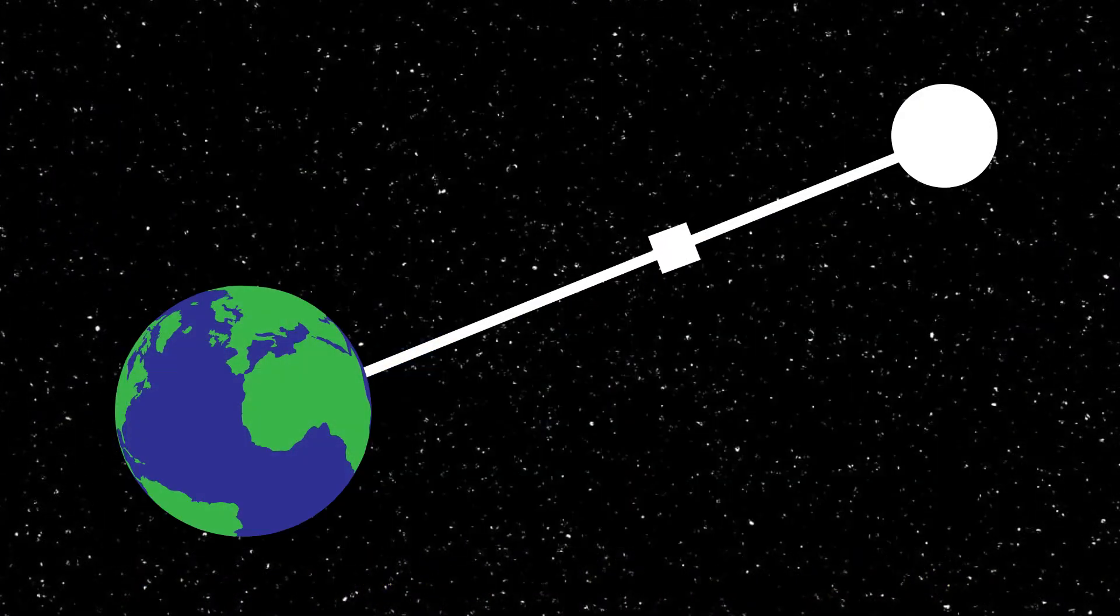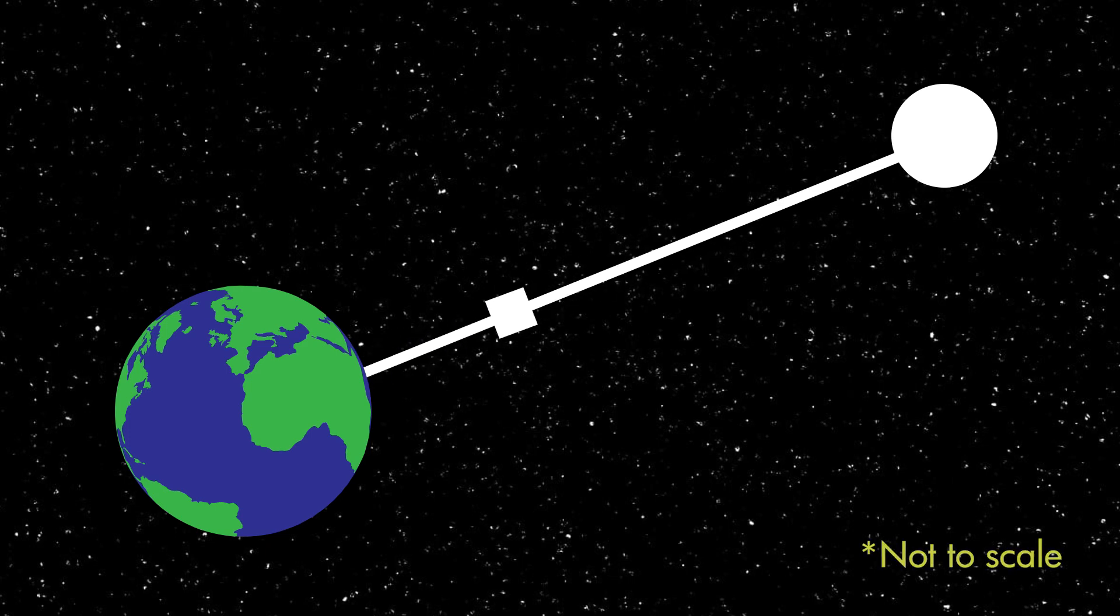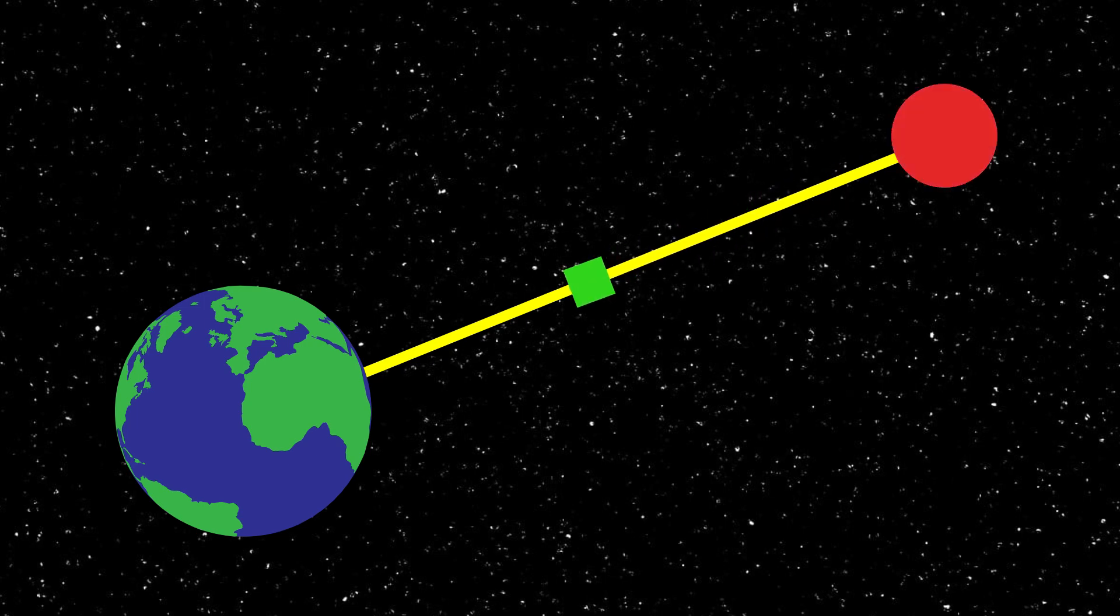Despite its futuristic looks, a space elevator is a relatively simple system. It primarily consists of a cable, a climber, and a counterweight.